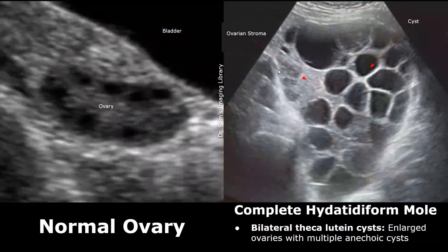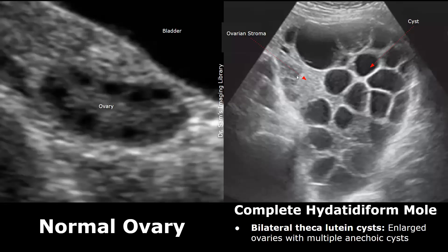The ovaries can also be affected in a molar pregnancy. Theca lutein cysts are seen, and it usually presents with bilateral theca lutein cysts. The image on the left shows a normal ovary in a transabdominal image. In the image on the right, you see an enlarged ovary filled with multiple anechoic cysts. The echogenic area is the ovarian stroma. Both the right and left ovaries will be enlarged and will have this type of appearance.